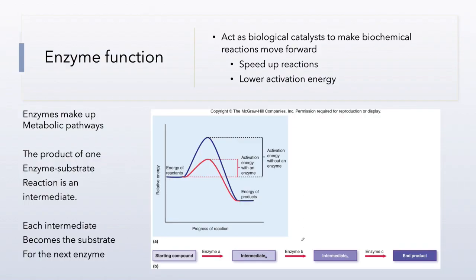How do enzymes do what they do? As a biological catalyst, they make reactions move forward by speeding up the reaction, and they do this by lowering what's known as the activation energy. Reactants when they come together have a given amount of energy, and how much energy is required for a reaction to occur between them is known as the activation energy — how much energy must be present for a bond to break or a new bond to be made. Enzymes lower that amount of energy.